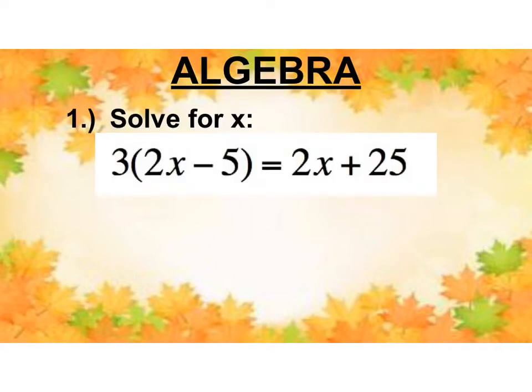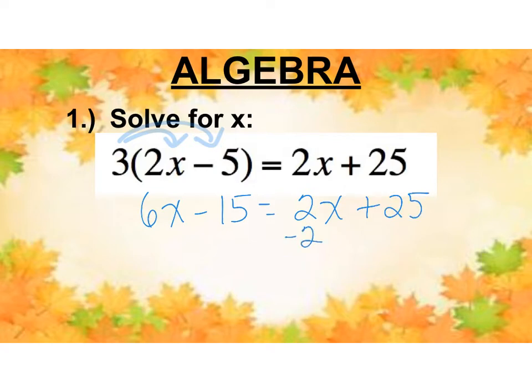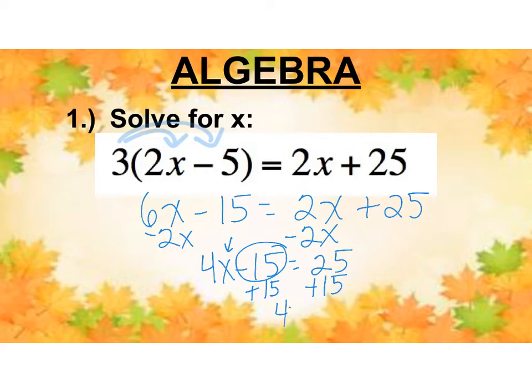Here we have an opener. We're going to solve this for X. So we see that we have the 3. This is going to be a distributive property and I get 6X minus 15 equals 2X plus 25. I have X's on both sides so I'm going to subtract those. I get 4X minus 15 equals 25. I want to solve for X. I want to undo the minus 15 so I'm going to add 15 to both sides and I get 4X equals 40. We're almost there. We'll divide both sides by 4 and we'll get X equals 10.